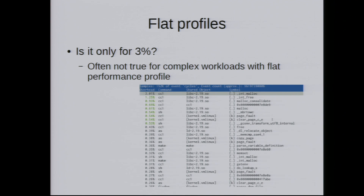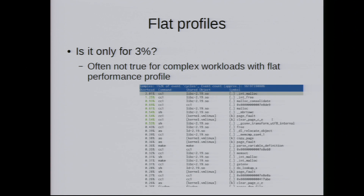The problem is, is it only 3%? Because if you look at a real application, you often end up with what's called a flat performance profile. It's really bad, because if you have a flat performance profile, nothing is standing out. The largest thing is about 3%, and most things are less than 1%. There's not really a single bottleneck you can see. These flat profiles are surprisingly common in complex workloads.